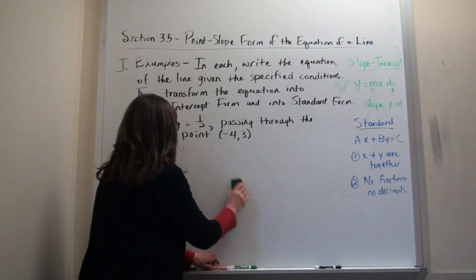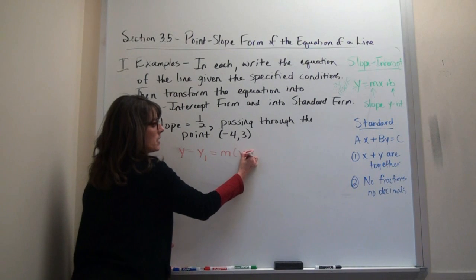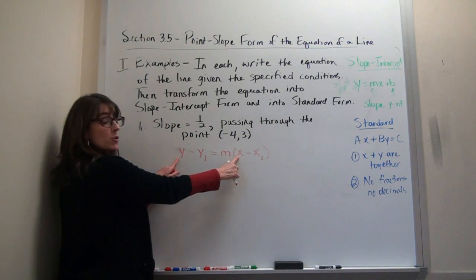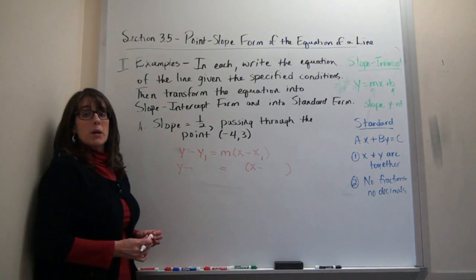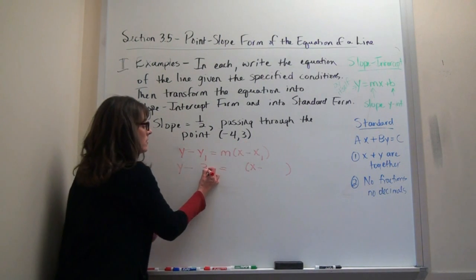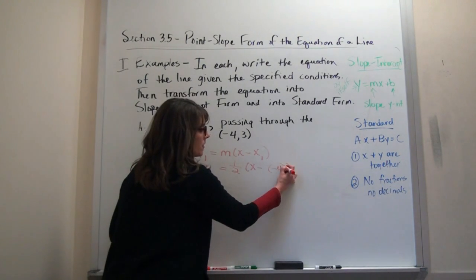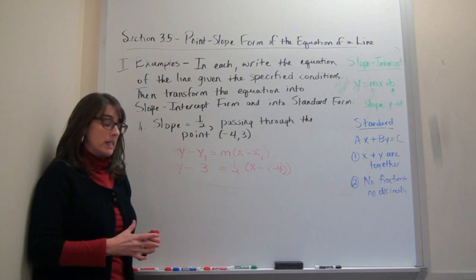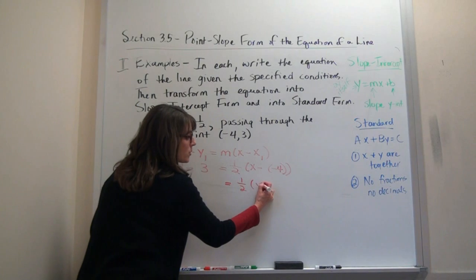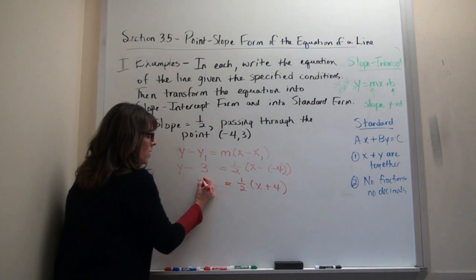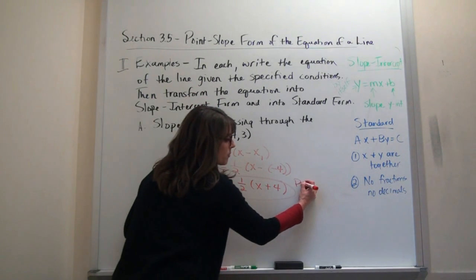The subscripts are off of y and x to remind me they stay as variables. Now I plug in: y1 is 3, m is one half, and x1 is negative four. Since subtracting a negative is really adding a positive, the cleanup gives me: y minus 3 equals one half times (x plus 4). That is my point-slope form of the equation of the line.